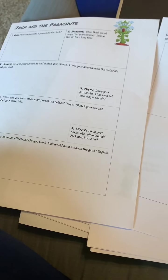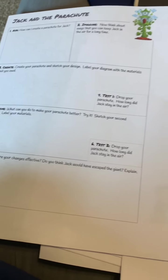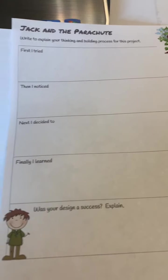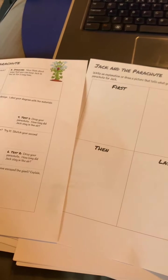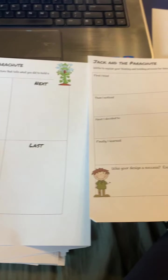Your parachute can be no longer than the length of your arm. Even if you do not have these materials, you can still do this activity by just drawing out how you would design a parachute. You can also do the work pages found on the link, either by downloading and printing them, or just copying the questions onto a piece of paper and answering them.